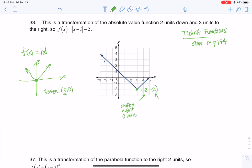And for this Y value, instead of the Y value being 0 like it is on the toolkit function, it's -2. So this has been shifted down 2 units.